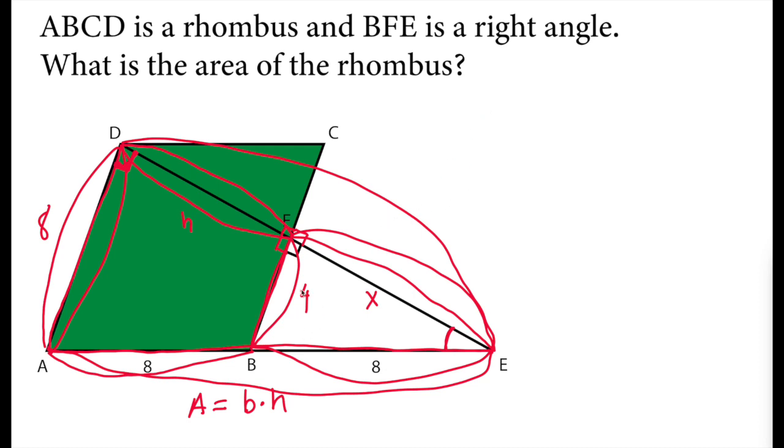So Pythagorean theorem says that square of the hypotenuse must be equal to sum of the squares of the other perpendicular lines. So this is a perpendicular line 4 and X is also perpendicular line. X squared plus 4 squared must be equal to 8 squared.